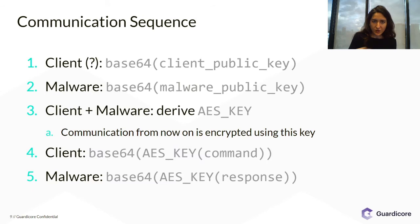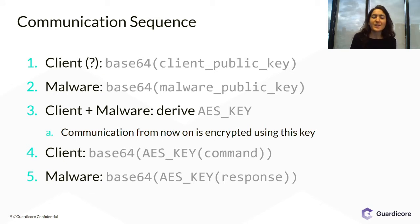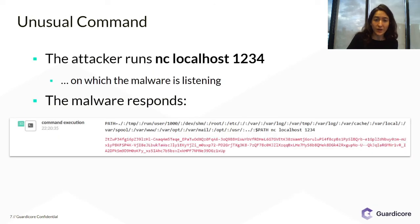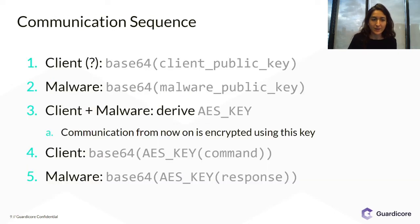Reverse engineering the flow a bit deeper, I understood that the communication sequence was as follows. The client connecting to the malware was expected to send its public key, Base64 encoded. And the malware responded with its own public key, also Base64 encoded, which is exactly what we saw here.